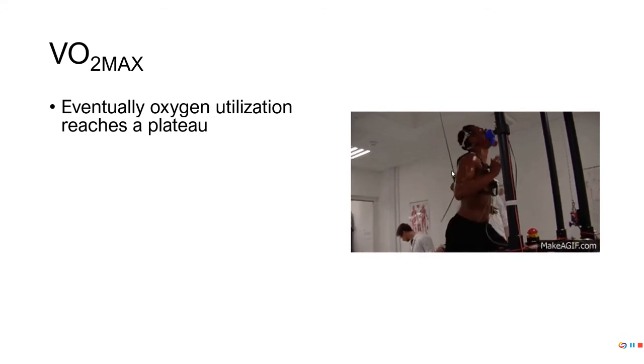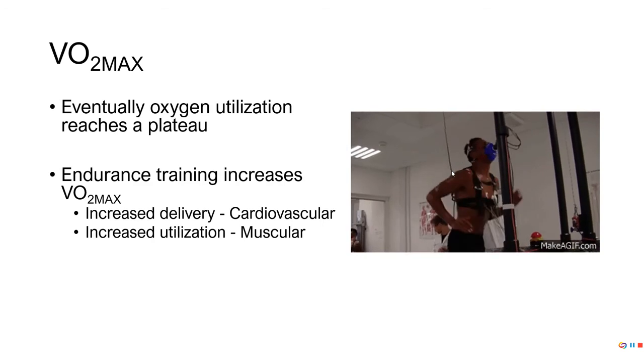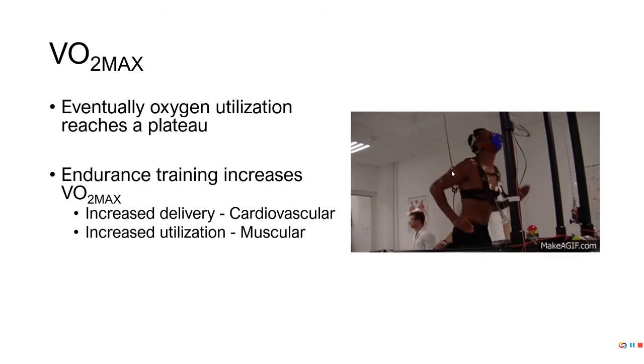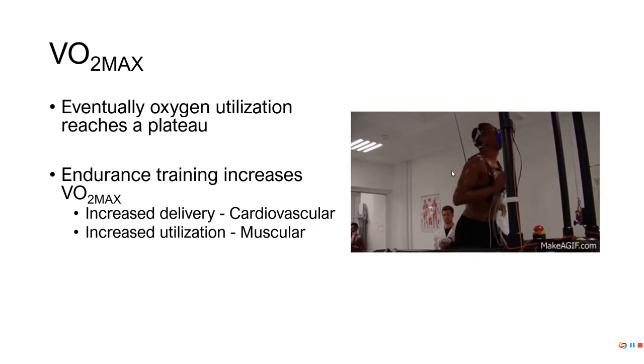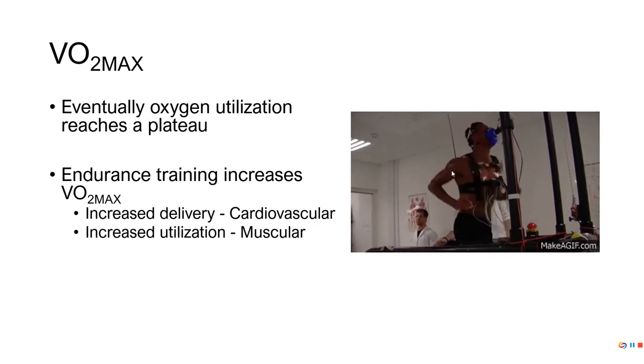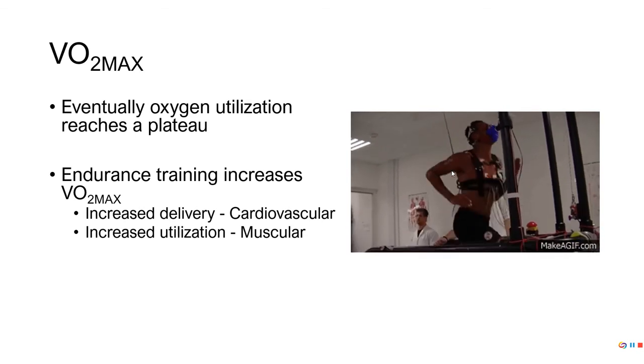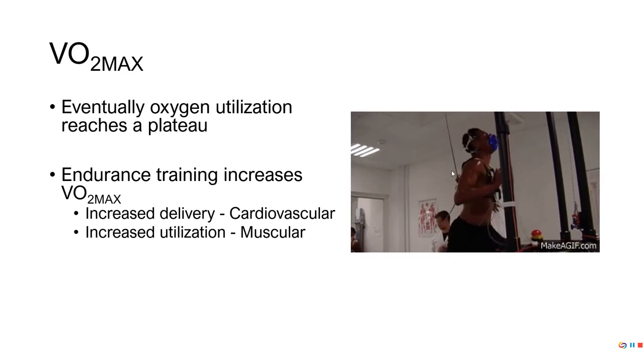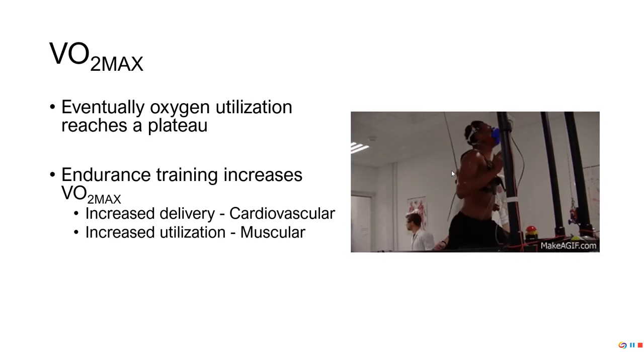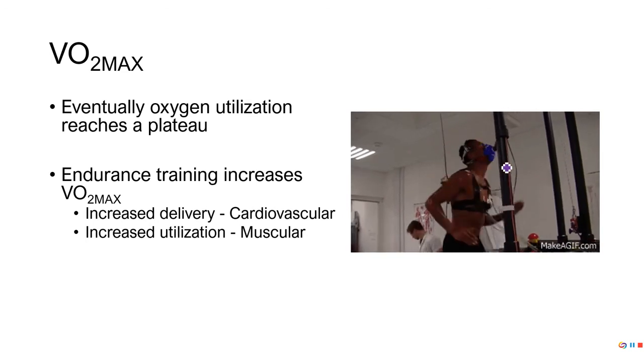So if we're going to think about this, kind of simply, we'll get into more detail later on. If we start to train, it's going to increase our VO2 max, and we're talking about aerobic training specifically. We'll be able to have increased delivery via the cardiovascular system, as well as being able to use that via the muscular system. We'll talk about this also later. Generally speaking, the respiratory system is not the issue. It can be, but very rarely is it.